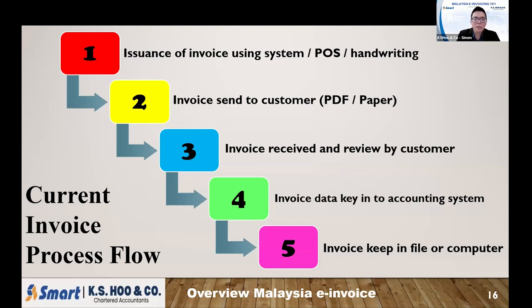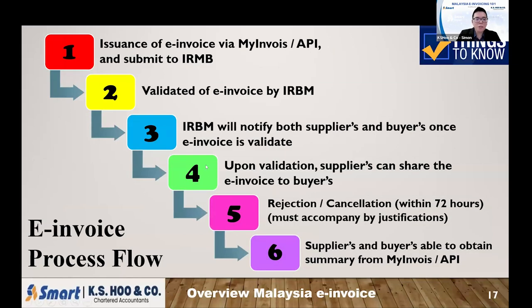After your customer receives the invoice, they will recheck and verify whether there's any error or mistake. If there is an error, they will ask you to amend accordingly and correct the invoice. If no amendment is needed, staff keep the data in the accounting system and file the invoice. Once complete, you submit to audit or for tax. This is the current invoice process.